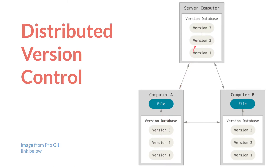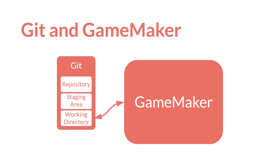That collection of commits is your repository or database. You can then push your commits to other databases, and they will have all of that information as well. Here's my own chart—my own model of how I think about this in relation to GameMaker. You have GameMaker and you have Git, and remember that they're separate things that all exist on your computer.